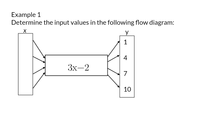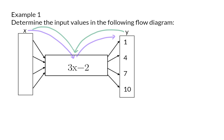Example 1. Determine the input values in the following flow diagram. Usually the function is applied to the input values to determine the output values, but now we are going to do this whole process backwards. We are given the output values and we are going to use this function backwards to determine the input values.